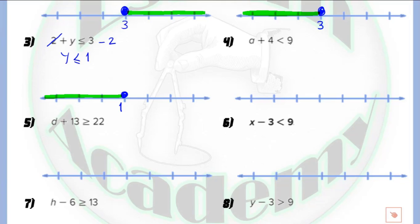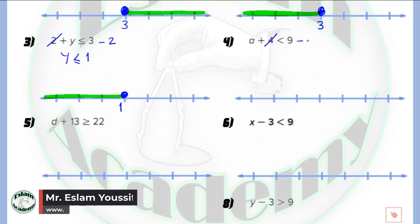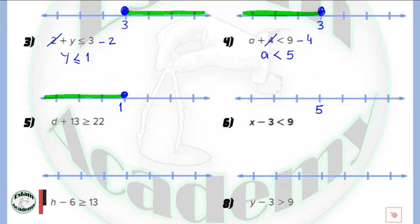Next, a plus 4 less than 9. Because it is plus 4, I will subtract 4. So a is now less than 9 minus 4, which equals 5. We write 5. It is less than only, so it will be an open circle, and because it is less than, we shade the part which lies at the left.